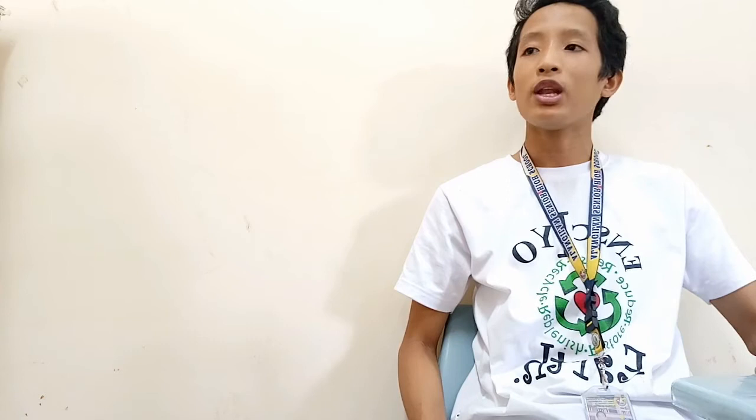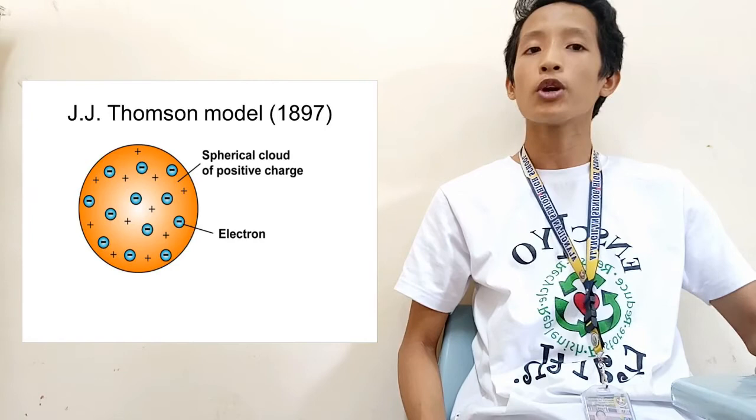During this time, a coherent structure of the atom was being developed, starting from J.J. Thompson's discovery of the electron to Rutherford's publication of his planetary model.